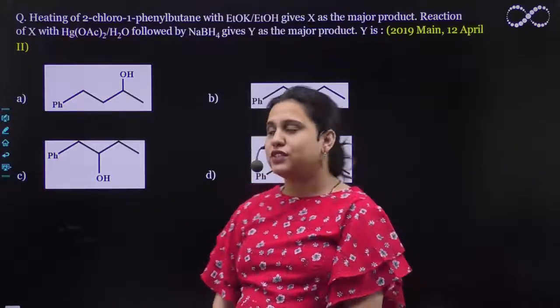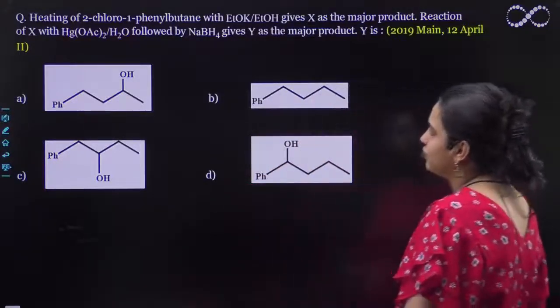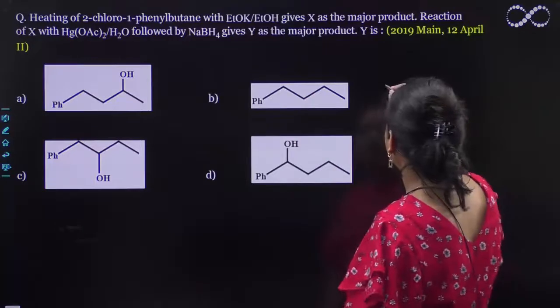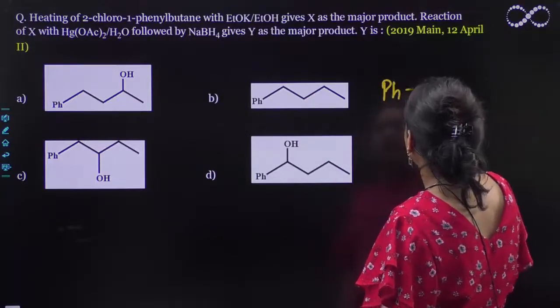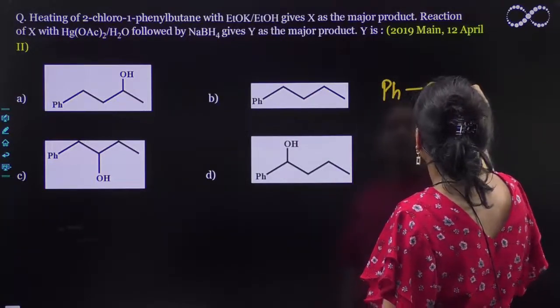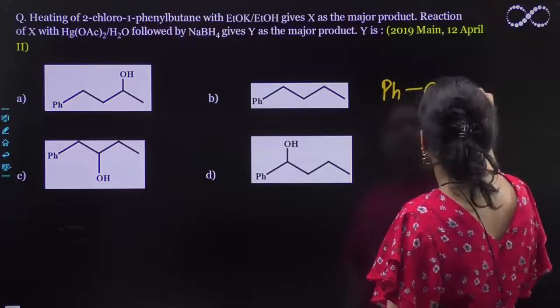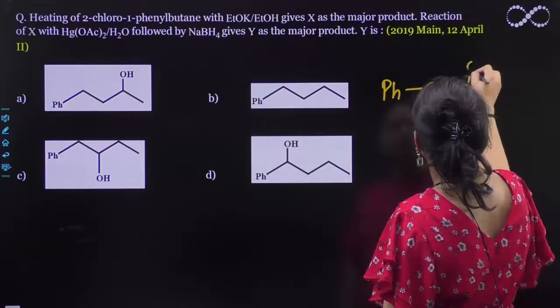Hello students, in this question you are asked about heating of 2-chloro-1-phenylbutane. 2-chloro-1-phenylbutane is Ph-CH-CH2Cl-CH2CH3.